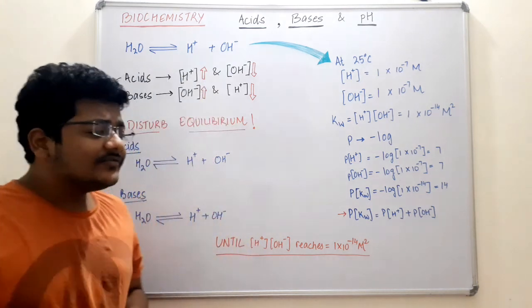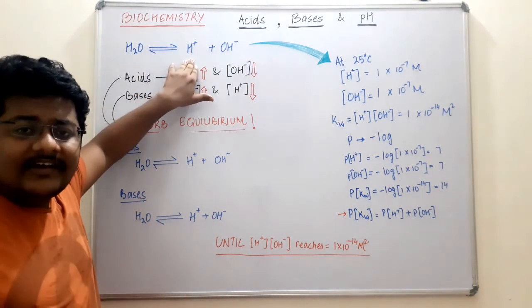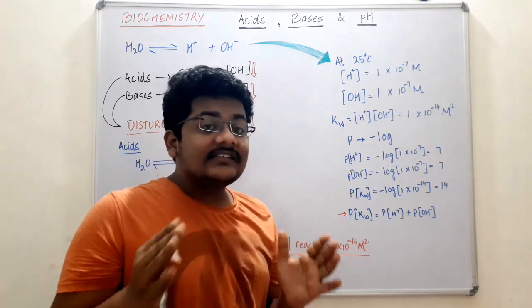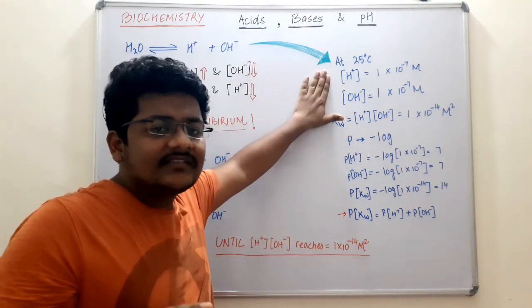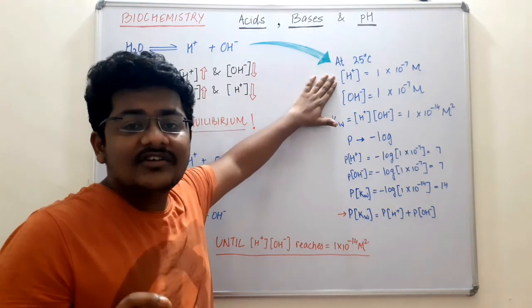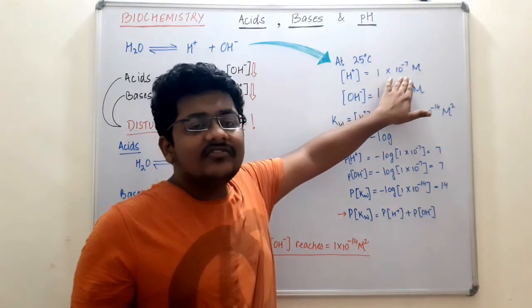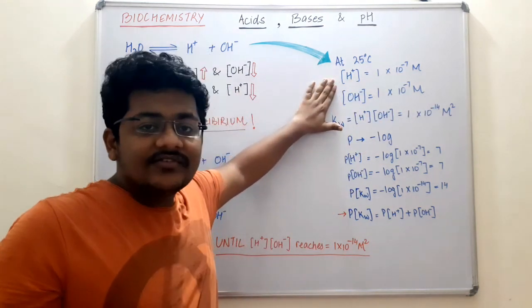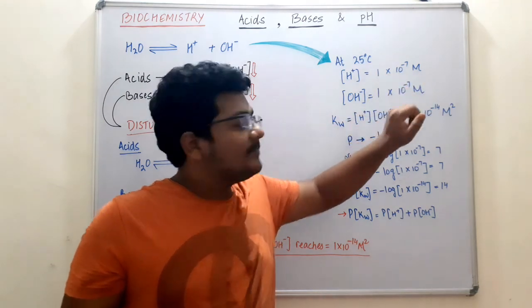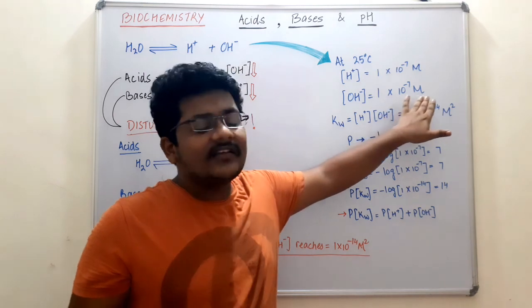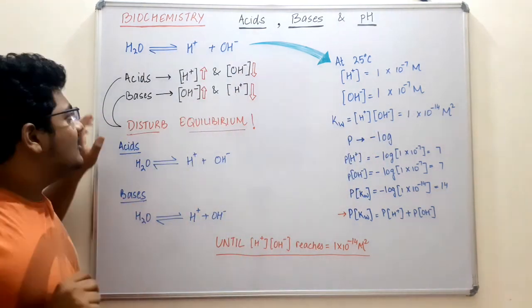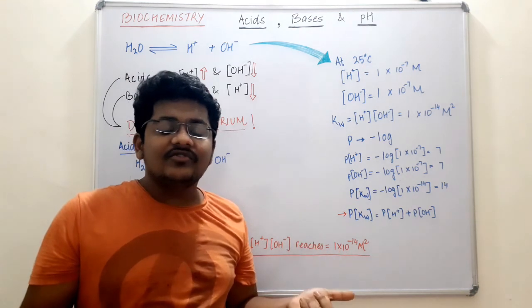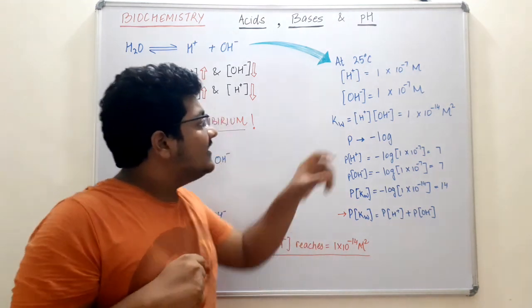Now let us talk about water. H2O dissociates to form H⁺ and OH⁻. At room temperature, that is 25°C, the concentration of hydrogen ions is 1 × 10⁻⁷ moles per liter. Molarity is moles per liter, so the hydrogen ion concentration is 10⁻⁷ mol/L. The OH⁻ ion concentration is also 10⁻⁷ mol/L, because each molecule of H2O gives one hydrogen ion and one hydroxide ion — therefore both are equal.